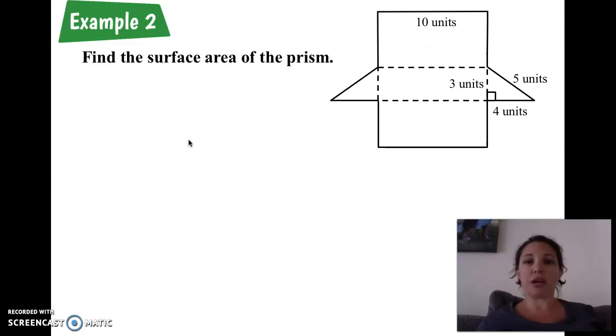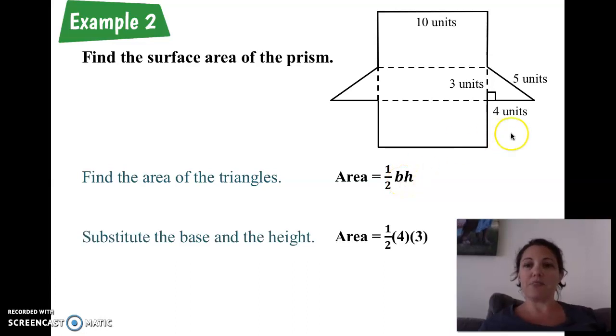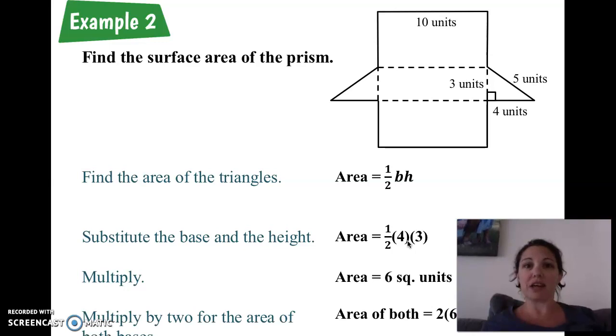So we can start with the triangle. We have the triangle here. Area of a triangle is one half the base times the height. So for this, the base is 4. The height is 3. Be very careful. This 5 is not the base or the height. Remember height. Where you see the right angle is where you're going to find the height and your base. So if we multiply 4 times 3, we get 12. Half of 12 is 6. But we don't have one triangle, we have two. So you're going to want to double that. So both triangles together give us a total of 12 square units. So we are two sides down. We still have three rectangles to go.